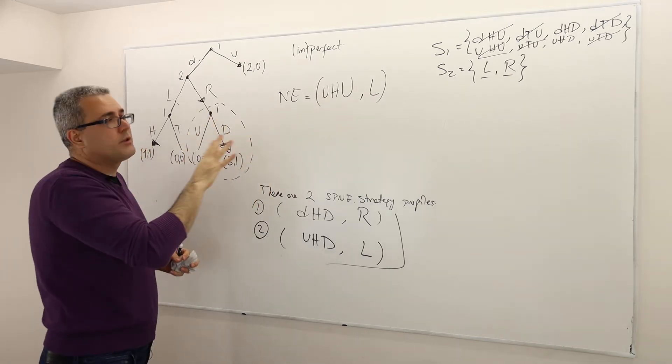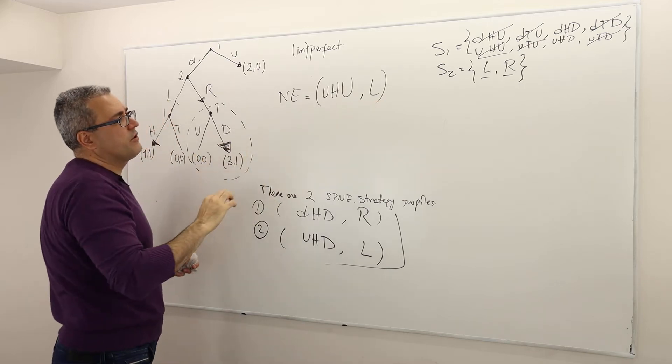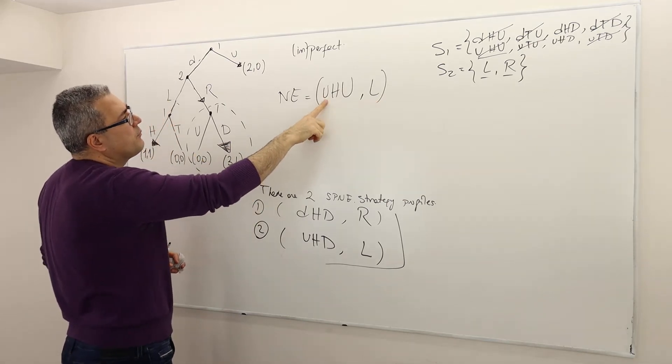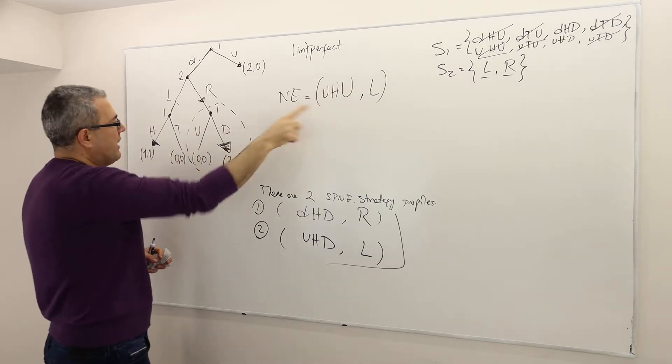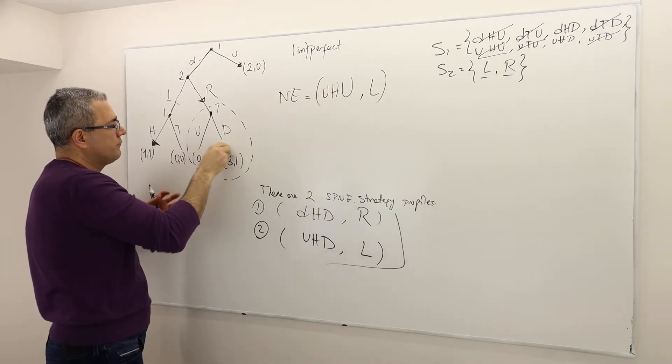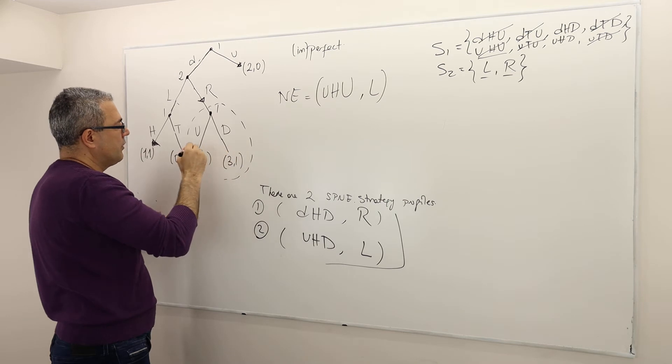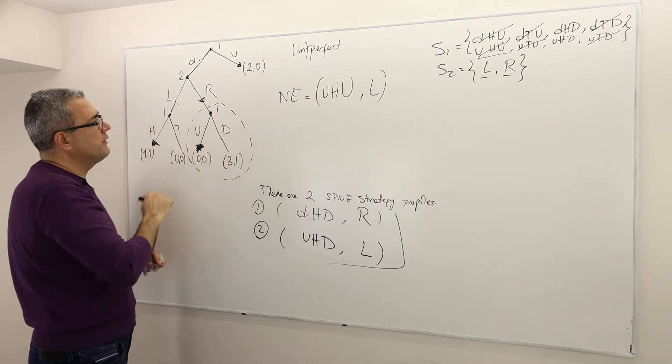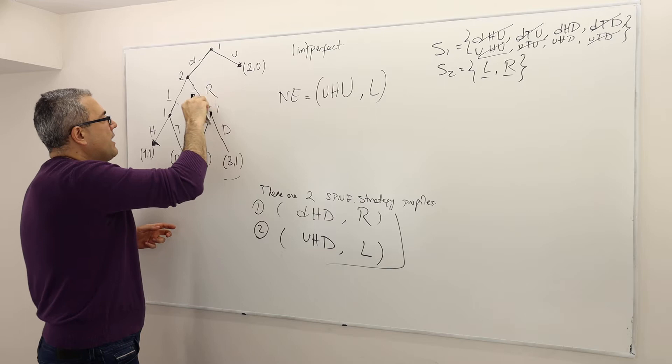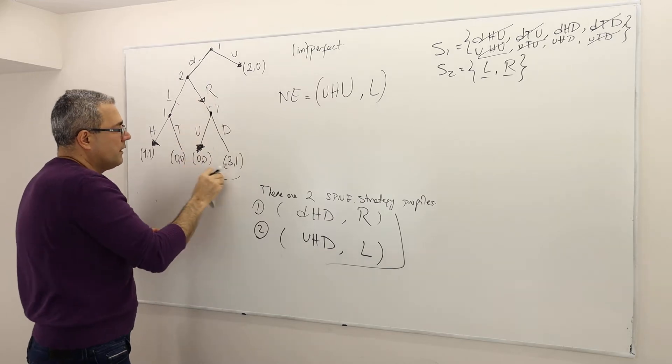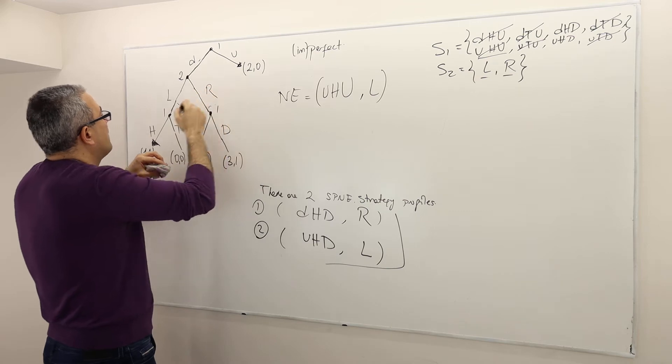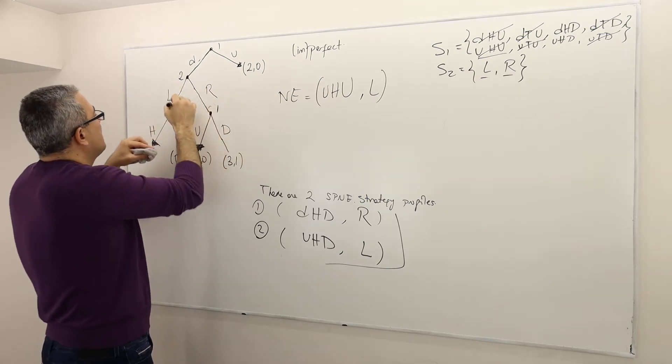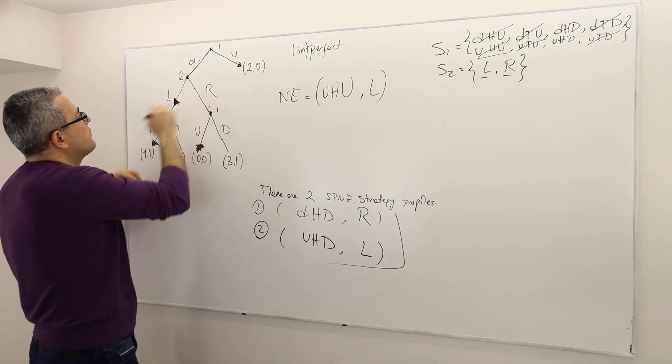Well, put arrows according to this strategy profile. It says player one is gonna play U here and then H here and then capital U here. Alright, very good. This is the strategy of player one and then player two is going to play left. So this is the strategy profile.